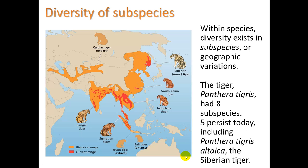You can also have subspecies. Within species, diversity exists in subspecies or geographic variations. The tiger, Panthera tigris, has had eight subspecies — you can think of these as eight different races of tiger. Five persist today, meaning three have become extinct. The five surviving subspecies are the Bengal tiger, Sumatran tiger, Indochina, South China, and Siberian tiger. The Bali tiger, Javan tiger, and Caspian tiger are extinct.